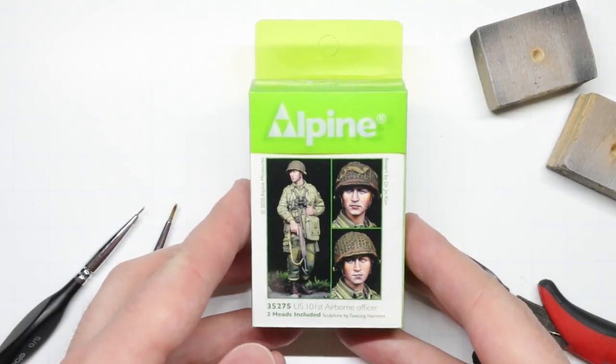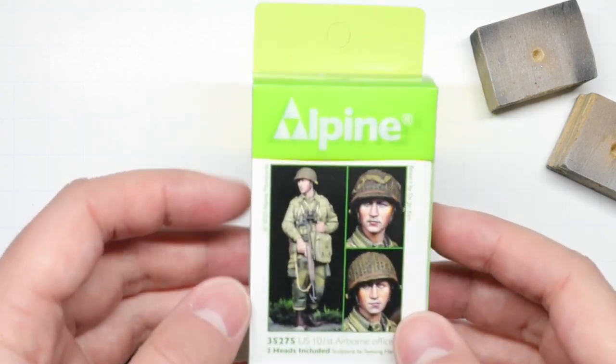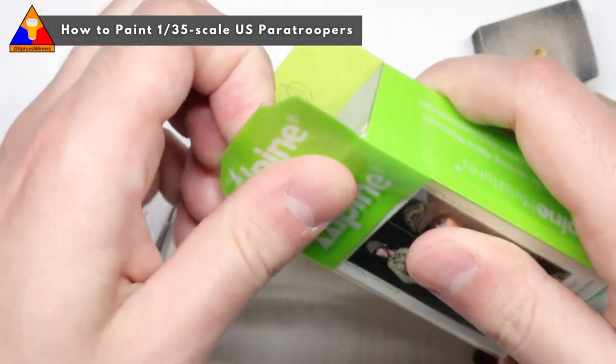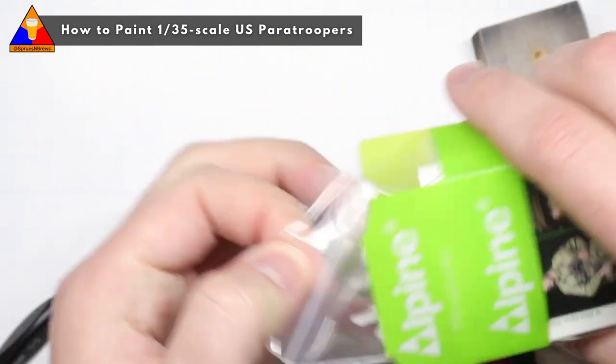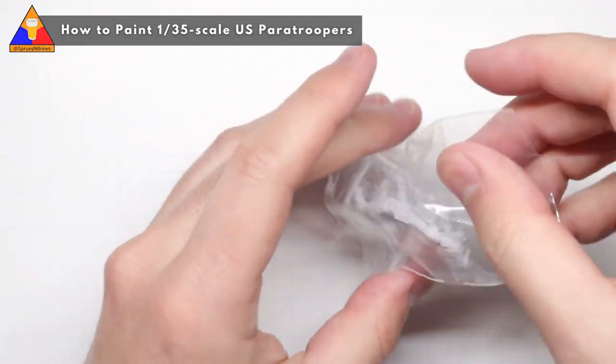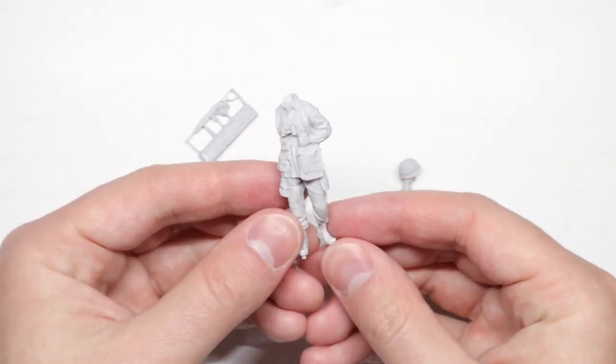What is going on guys, Hank here from Sprues and Brews, and in this video we're going to be doing a full tutorial on how to paint up 1/35 scale US World War II paratroopers. So whether you're an experienced modeler looking to add a nice little figure to your collection, or maybe you're a fan of the Band of Brothers series and want to dabble with figure painting for the first time, you are in the right place.